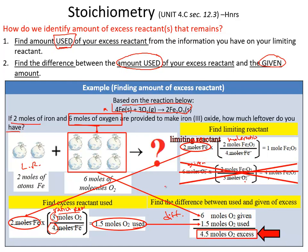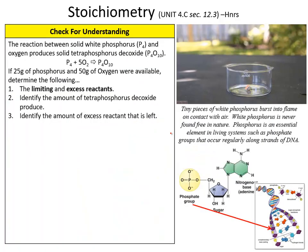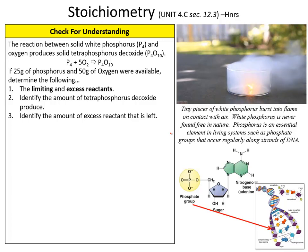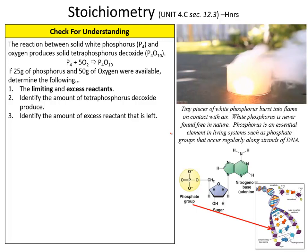There are different ways of solving this too — you can also find the amount from the product and work back to find how much reactant was used for oxygen. Take a look at the example about phosphorus and oxygen gas and see if you can apply the skills just taught. If you have any questions, hit me up in the tutorial. Thanks.